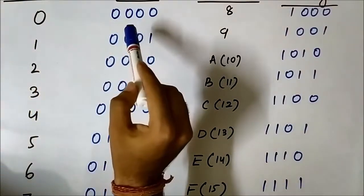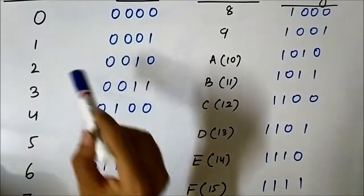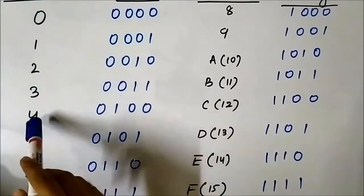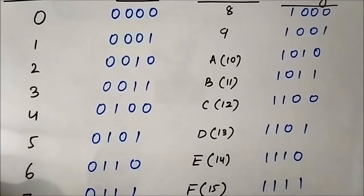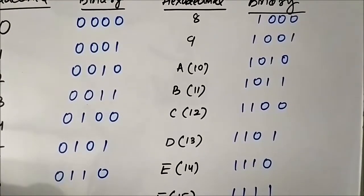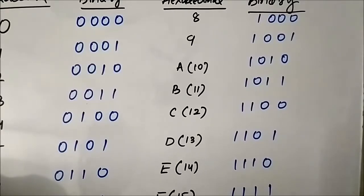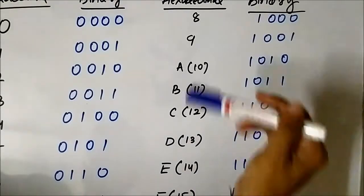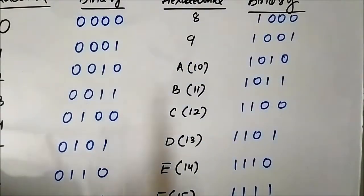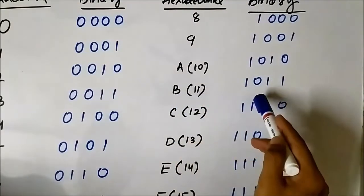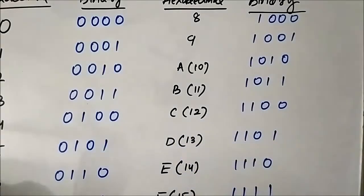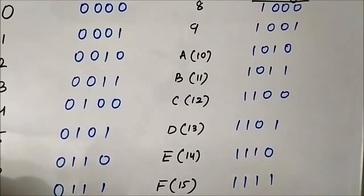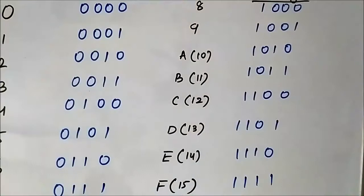So 0 is represented as 0000, 1 as 0001, 2 as 0010, 3 as 0011, 4 as 0100, 5 as 0101, 6 as 0110, 7 as 0111, 8 as 1000, 9 as 1001, A (10) as 1010, B (11) as 1011, C (12) as 1100, D (13) as 1101, E (14) as 1110, and F (15) as 1111.